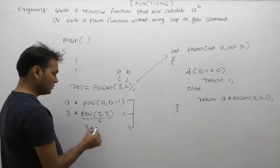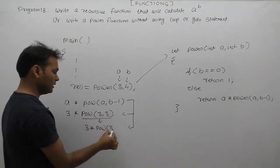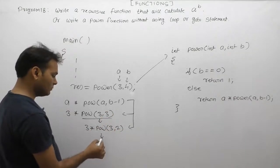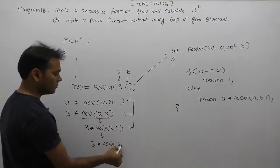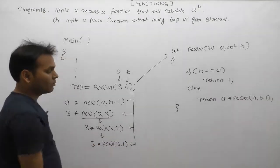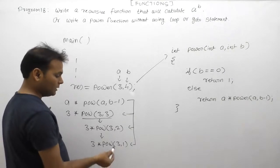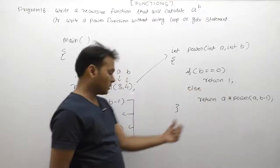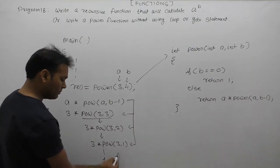We call power(3, 2), then 3 multiply by power(3, 1). The power function keeps being called. Next time 1 minus 1 is 0. When b is 0, the condition is true, so it directly returns 1, not an expression. It returns 1 in its calling place.